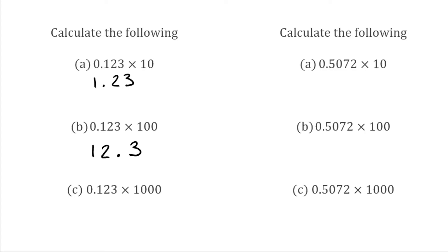For part C, we've got 0.123 multiplied by 1,000. Because we've got three zeros, we're going to move it three places to the left. The 1 makes it over the decimal point, the 2 makes it over, and so does the 3. So the answer to this is just 123.